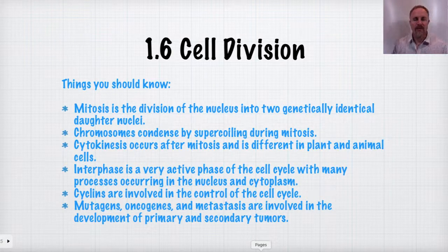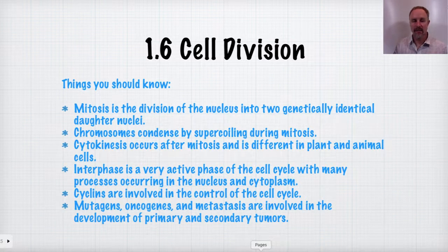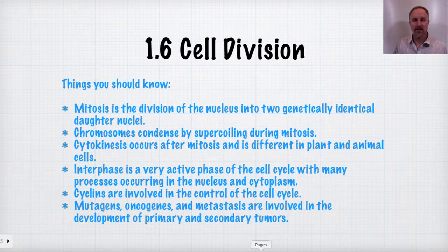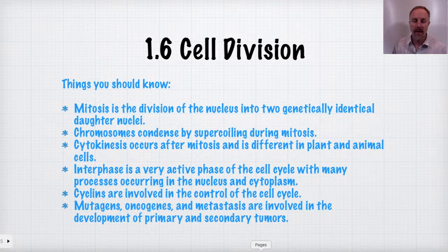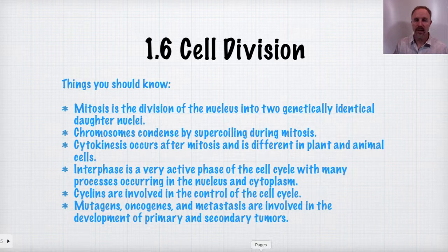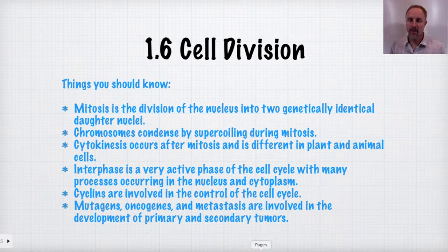Today we're talking about module 1.6, cell division. Key things to know: mitosis is the division of the nucleus into two genetically identical daughter nuclei. Chromosomes condense by supercoiling during mitosis. Cytokinesis occurs after mitosis and differs in plant and animal cells. Interphase is a very active phase of the cell cycle, not part of mitosis, with many processes occurring in the nucleus and cytoplasm. Cyclins and kinase molecules control the cell cycle, and mutagens, oncogenes, and metastasis are all involved in tumor formation — runaway cell growth when cell division goes awry.